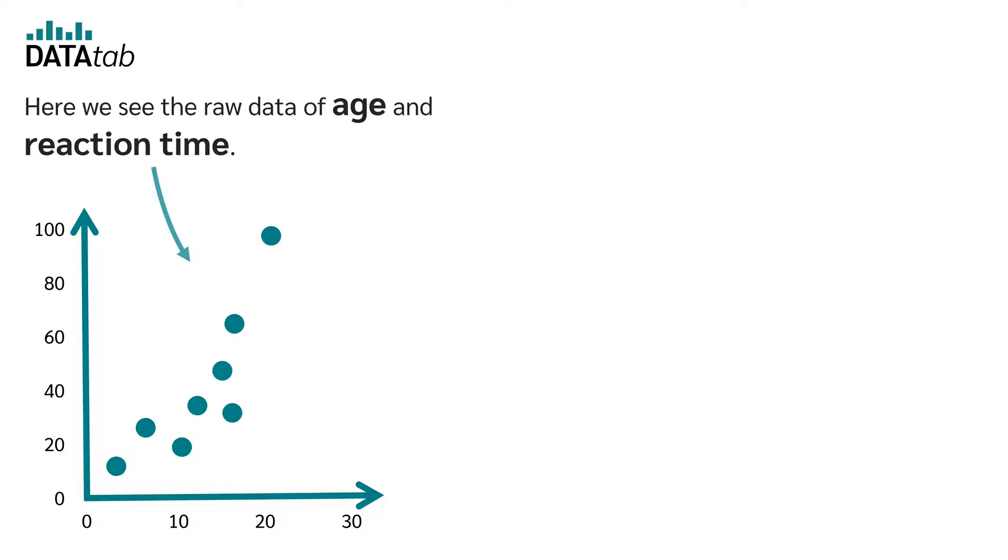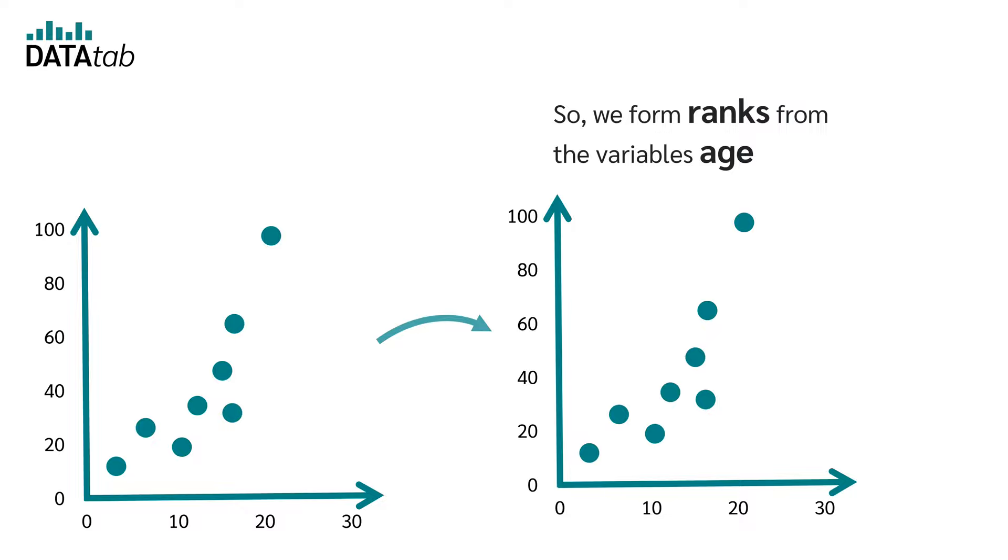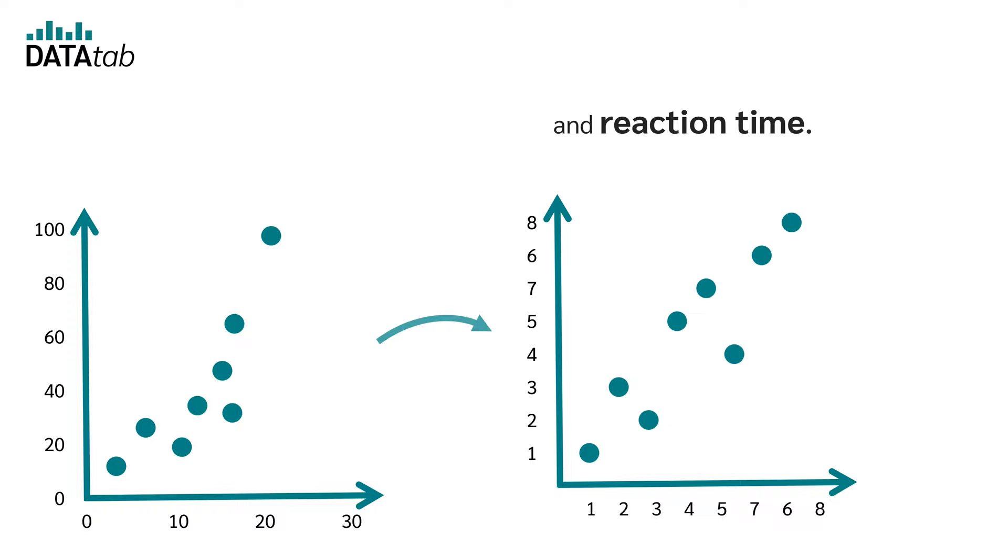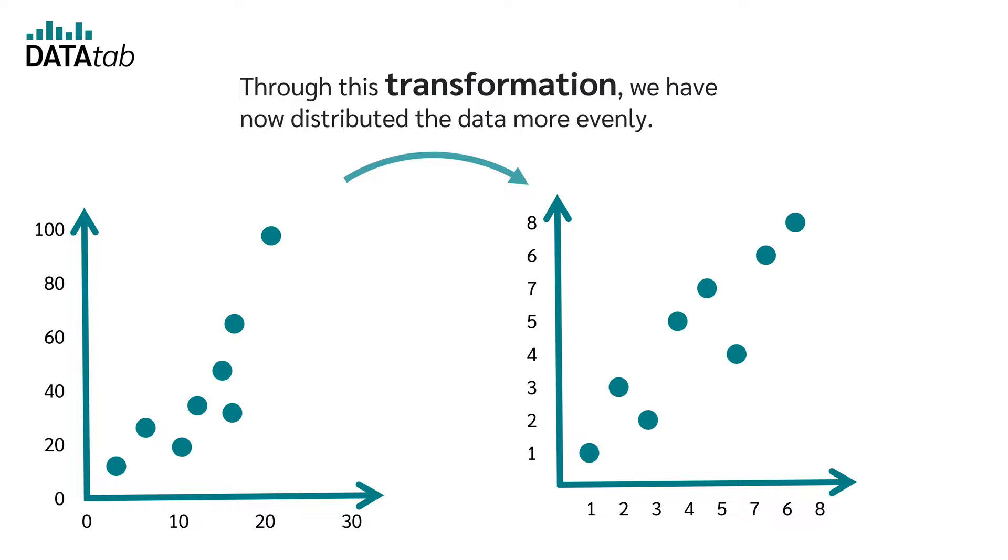Let's take a look at this in a scatter plot. Here we see the raw data of age and reaction time. But now we would like to use the rankings. So we form ranks from the variables age and reaction time. Through this transformation, we have now distributed the data more evenly.